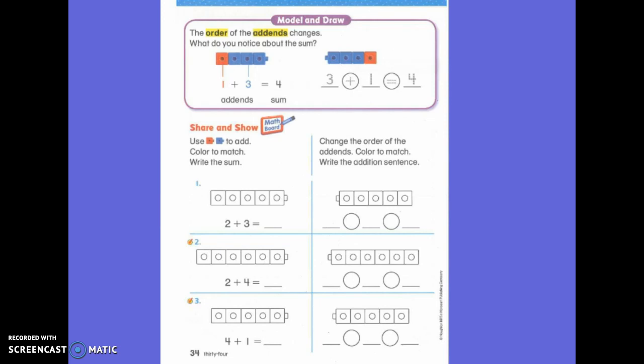So, the order of the addends has changed. I can flip them back and forth. Right? It makes different numbers, but does the sum change? No. It doesn't when I switch the addends. Okay? So, that's okay when I add. Addends. I can change the order of them.